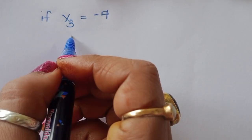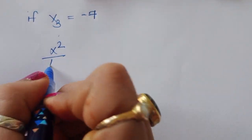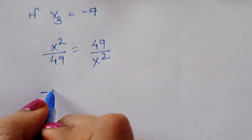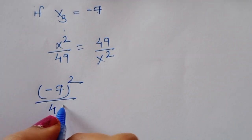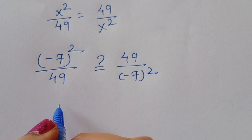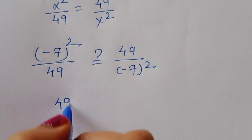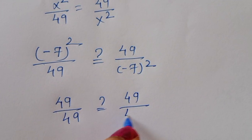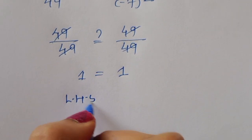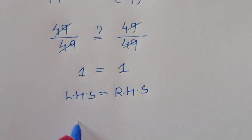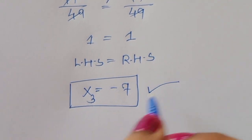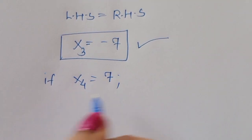For x₃ = -7: substituting into x²/49 = 49/x², we get (-7)²/49 = 49/(-7)². Since (-7)² = 49, this becomes 49/49 = 49/49, so 1 = 1. LHS = RHS, so x₃ = -7 is also a correct solution.